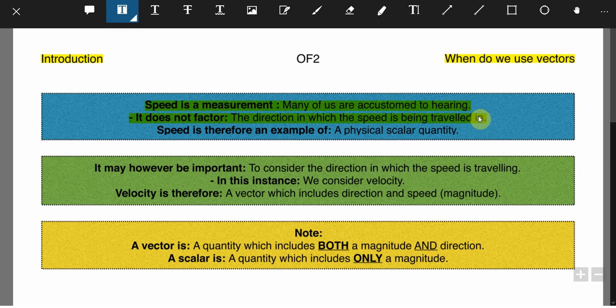Take for example a Mercedes going 50 miles an hour due north. Now think of a BMW doing 50 miles an hour due west. They're doing exactly the same speed but they're traveling in completely different directions. In that case, we're aware that speed is therefore an example of a physical scalar quantity.